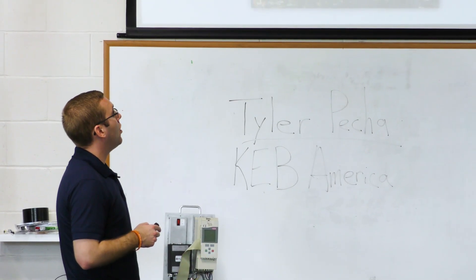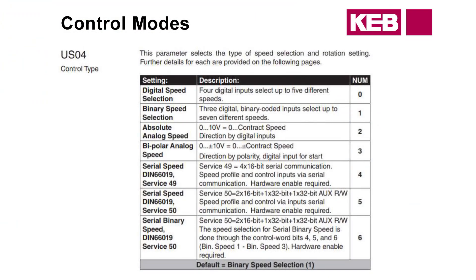Now we're going to move to control modes. There are a lot of different control modes available, and it's going to vary by controller manufacturer. The most common are going to be serial Service 49, binary, and digital speed control. As far as analog speed control goes, we have two different modes of analog, and the difference between the two is how the direction is determined. We also have two serial protocols: Service 49 and Service 50.